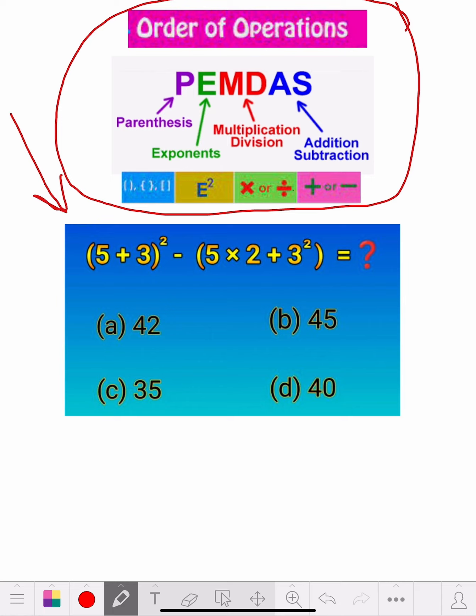So do what's in the parentheses first. I'm just going to rewrite below what's in the parentheses. Let's see what we got. We got brackets, 5 plus 3, it's 8, and the brackets, square.